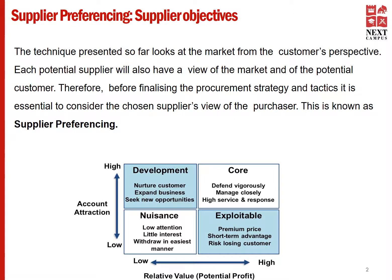Let us focus on the picture on this slide. A supplier would look at a customer from four perspectives, and those four will be assessed through two variables: one would be how attractive is the customer's account, and the second one would be the potential profit that account would generate.